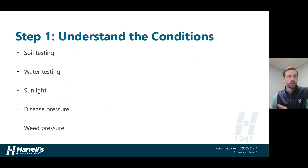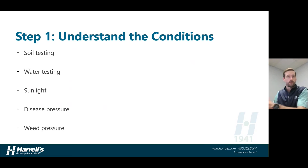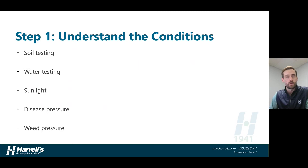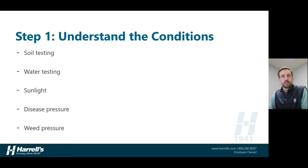For example, let's say that we're applying RONSTAR year after year because we have a high level of goosegrass pressure on a golf course. Well, maybe because we've done such a great job at managing goosegrass, now crabgrass is becoming more of a challenge. And so we need to shift to a different pre-emerge herbicide that is more effective for crabgrass control. Understanding what your current agronomic pressures are is going to be a great first step in understanding what tools you need to implement to develop an agronomic program.